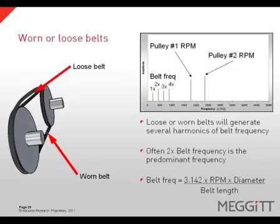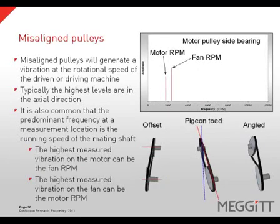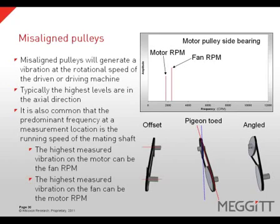Worn or loose belts will often generate several harmonics of belt frequency, and two-times belt frequency is often the predominant frequency. Belt frequency can be calculated by multiplying 3.142 times the RPM times the diameter of a given shaft divided by the overall belt length. Misaligned pulleys will generate vibration at the rotational speed of the driven or driving machine, with the highest levels typically in the axial direction. It is common for the predominant frequency at a measurement location to be the running speed of the mating shaft — for example, the highest vibration on a motor can be the fan RPM, or the highest on the fan can be the motor RPM.